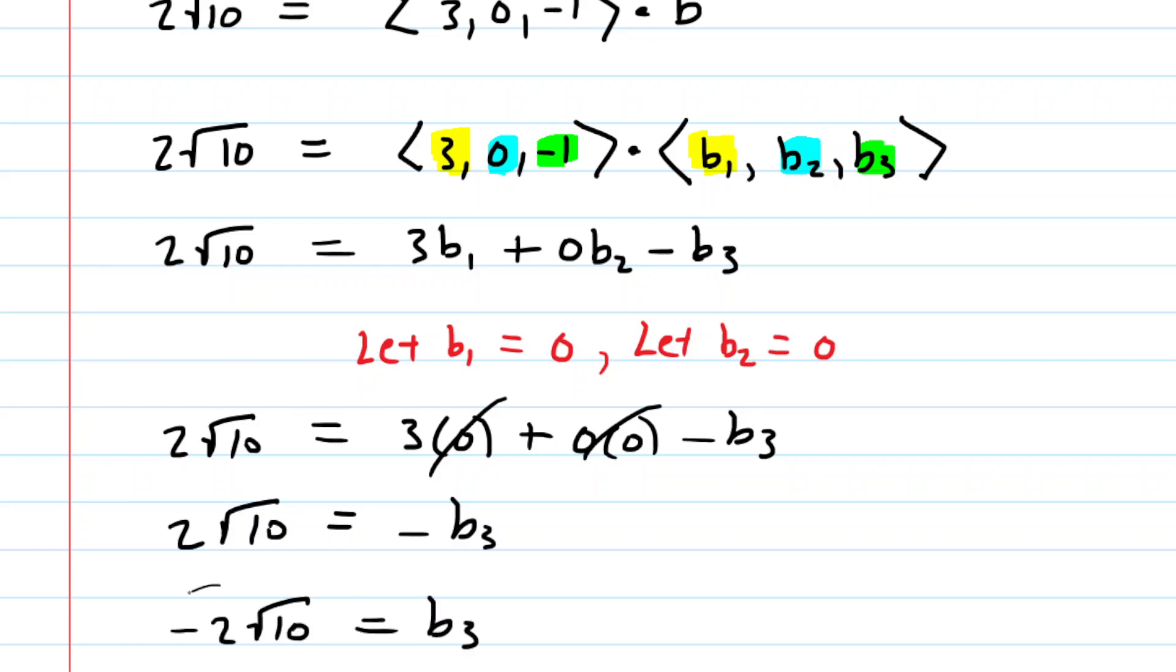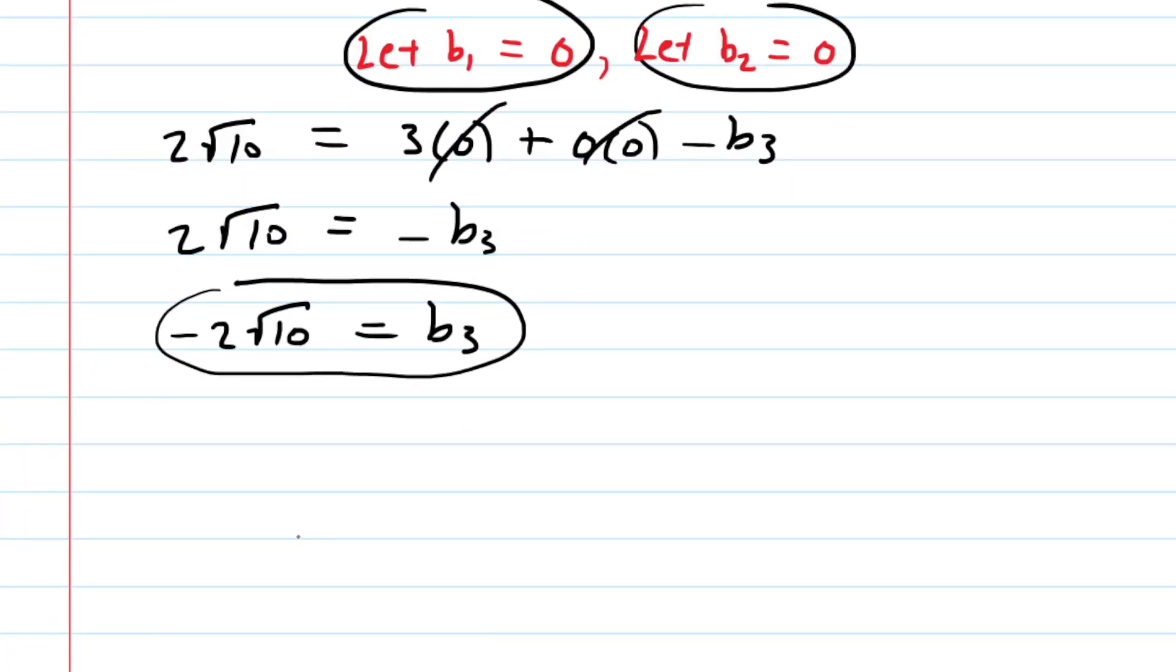So now we have the Z component, we also have the Y component, and we also have the X component. So one potential vector for B would equal the X component of 0, the Y component of 0, and then the Z component of negative 2 square root of 10. So this would be an acceptable answer to the question.